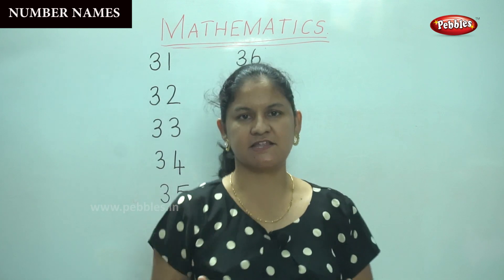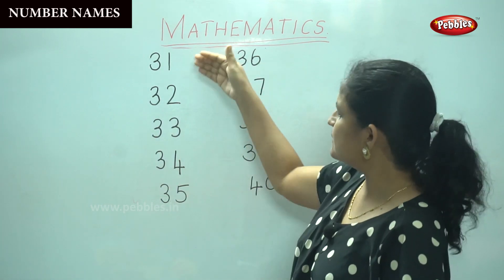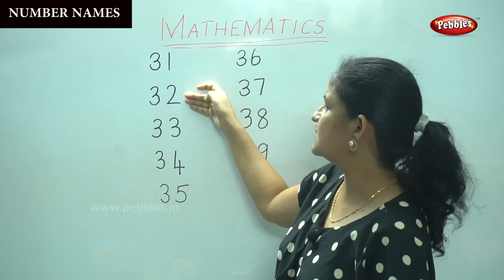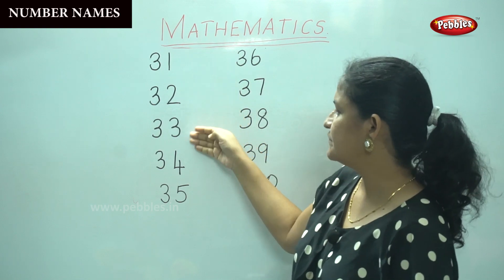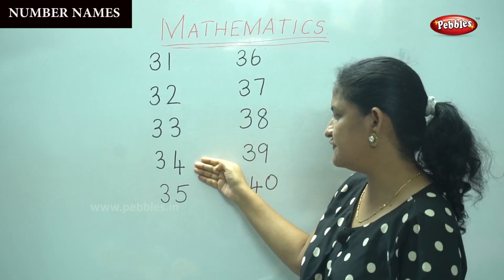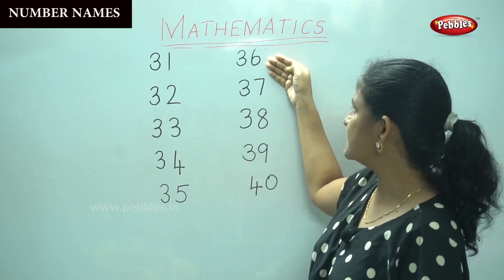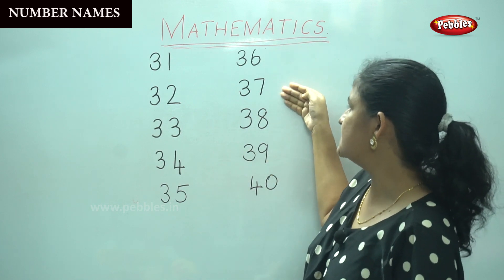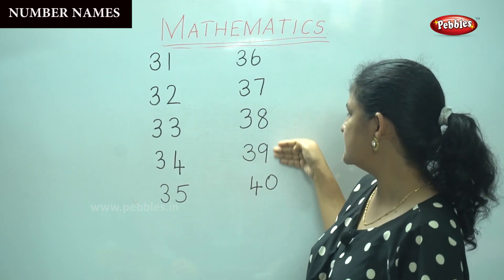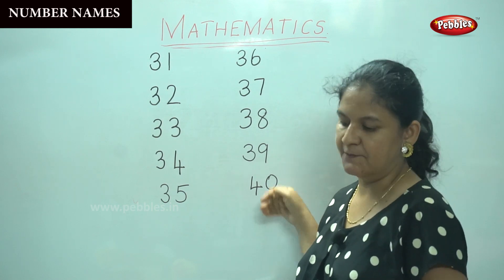So we will say the numbers continuously: 31, 32, 33, 34, 35, 36, 37, 38, 39, and 40.